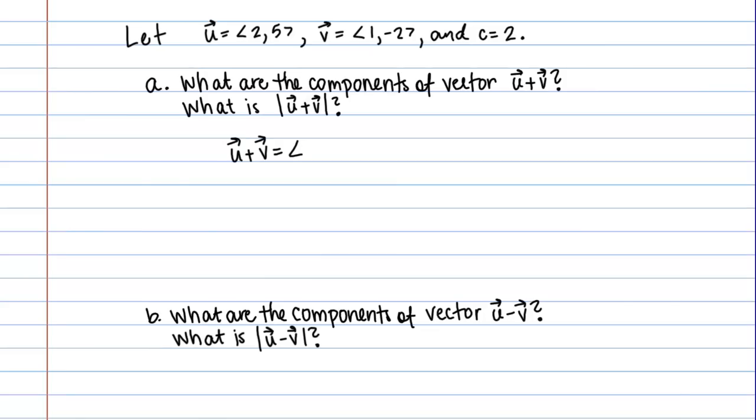For the X component, it's going to be 2 plus 1. I'm just getting those from up here, the 2 and the 1. For the Y component, it's going to be 5 plus negative 2. If I simplify that, the components of the sum of the vectors are 3 and then 3.